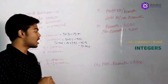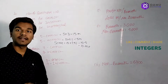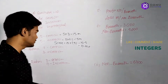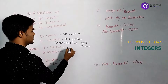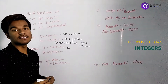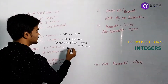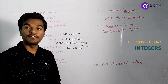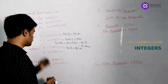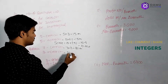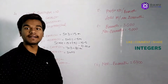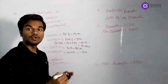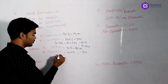The second one: Reshma attempted 7 correct answers and 3 incorrect answers. For 7 correct answers: 7 into 3 marks each, that is 21 marks awarded for correct answers. Then 3 into minus 1 for incorrect answers, that is minus 3 marks. What is the total score of Reshma?